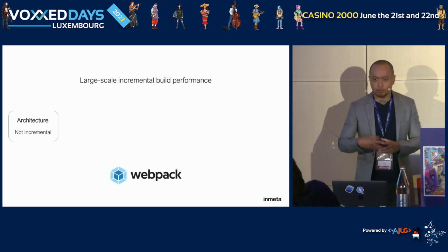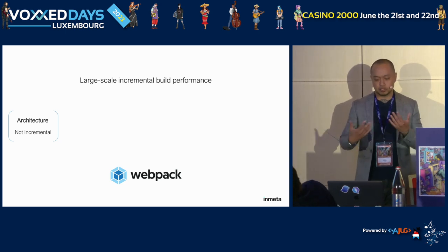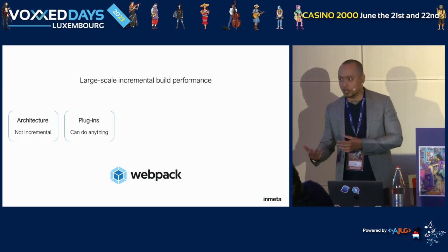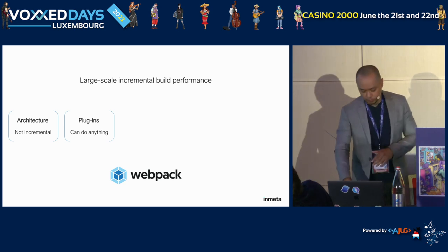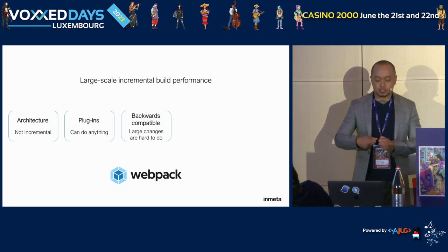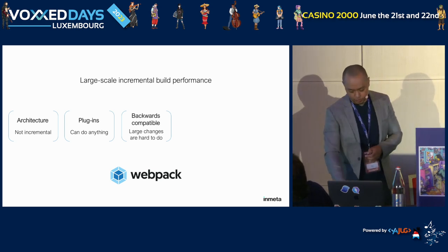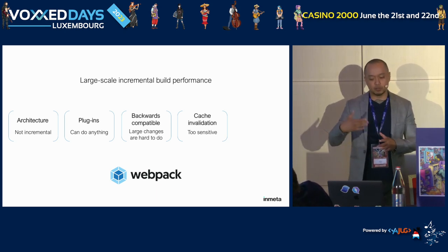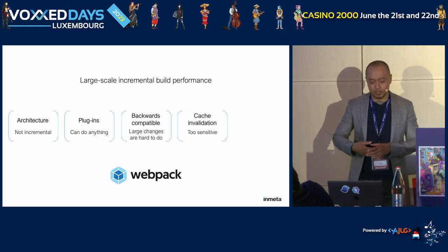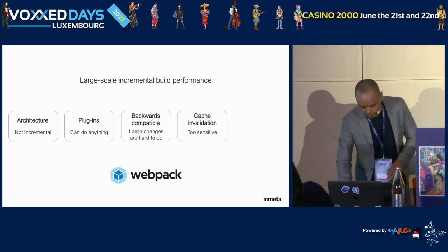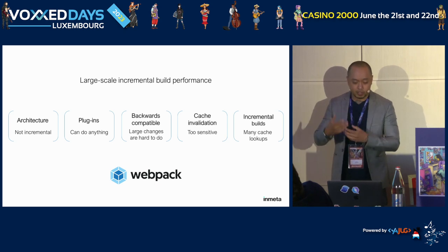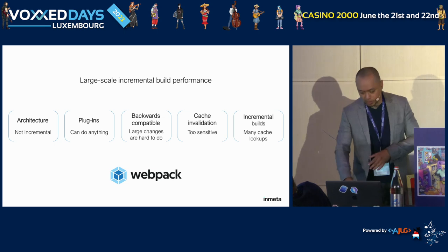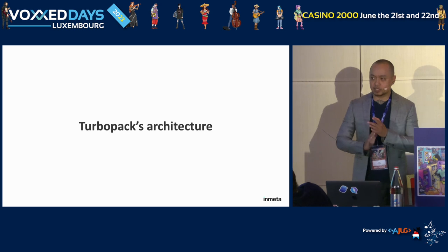Why replace Webpack? Webpack was created ten years ago. It retains its dated architecture despite significant growth in web development. Webpack's architecture isn't suited for large-scale incremental builds, and it's difficult to fix due to numerous dependent plugins. Changing Webpack's architecture while maintaining backwards compatibility is challenging as it risks breaking existing implementations. Another problem: cache invalidation is too sensitive, causing extensive rebuilding even when small changes are made, and with many modules cache lookup costs become very high.